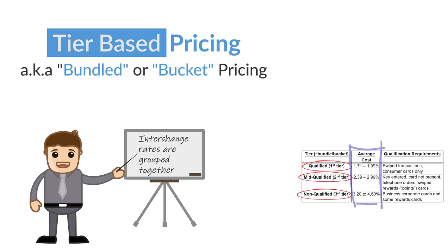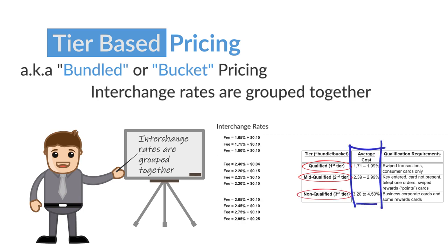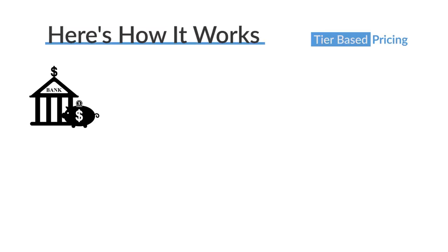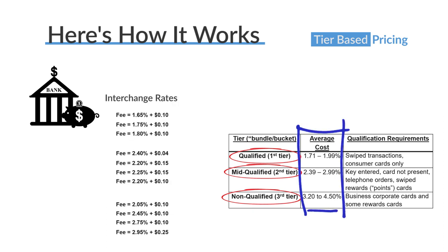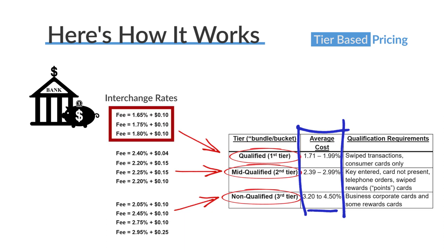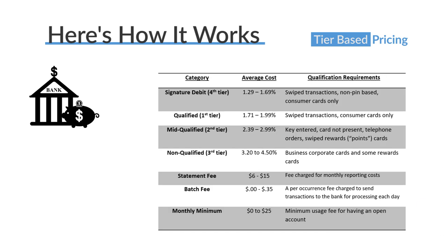Tier-based pricing is another main model. With tier-based pricing, interchange categories are grouped together and assigned one tier, also referred to as a bucket. For example, a tier-based model might take many interchange categories and group them into various tiers, where a single rate is applied. Card types that fall into one tier share similar characteristics, such as being card-present or card-not-present.